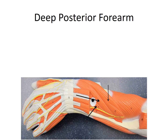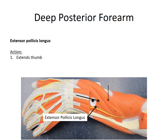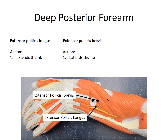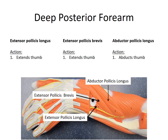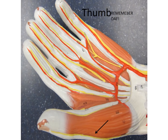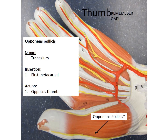We have more deep posterior forearm muscles. The extensor pollicis longus extends the thumb — 'pollicis' always refers to the thumb. The extensor pollicis brevis — 'brevis' means short, so it's shorter than the longus — also extends the thumb. The abductor pollicis longus abducts the thumb. Finally, the opponens pollicis — we need to know origin, insertion, and action. 'Opponens' means it opposes, and 'pollicis' means thumb, so the action is opposition of the thumb. The origin is the trapezium and the insertion is the first metacarpal.